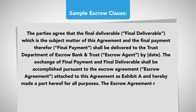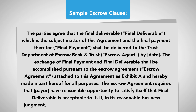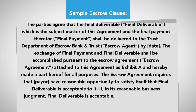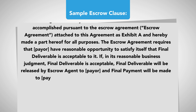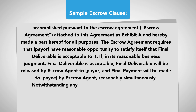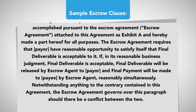The escrow agreement requires that payer have reasonable opportunity to satisfy itself that final deliverable is acceptable to it. If, in its reasonable business judgment, final deliverable is acceptable, final deliverable will be released by escrow agent to payer, and final payment will be made to payee by escrow agent, reasonably simultaneously. Notwithstanding anything to the contrary contained in this agreement, the escrow agreement governs over this paragraph should there be a conflict between the two.